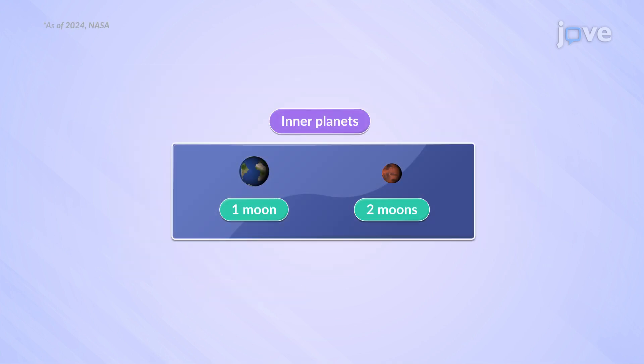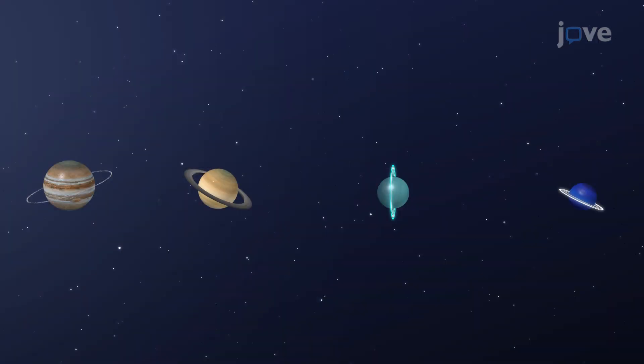Unlike the inner planets, the outer planets have many moons and beautiful rings made of dust and other particles.